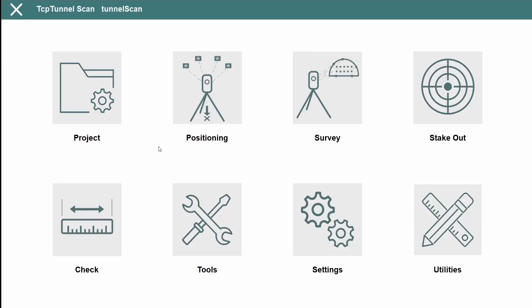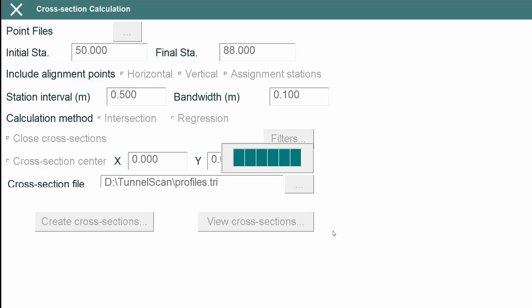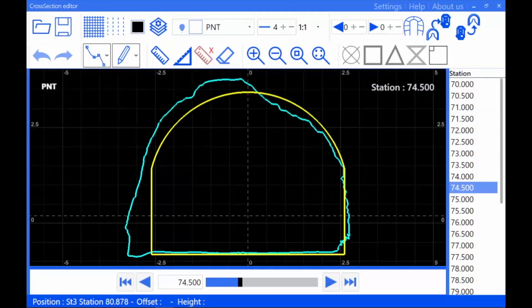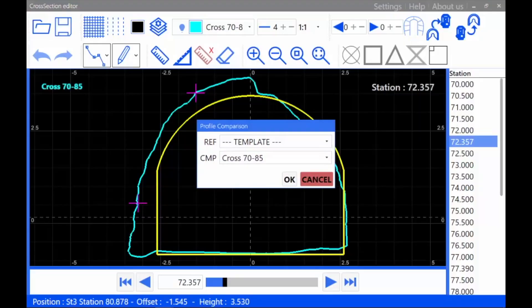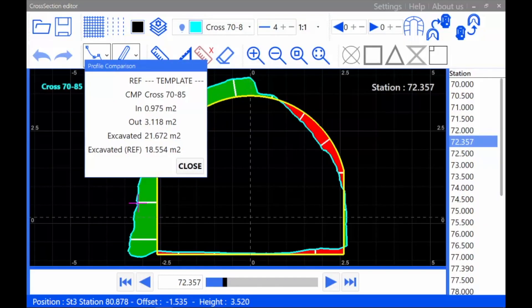High definition tunnel cross sections are quickly calculated from the point cloud and they can be consulted, edited and compared to the tunnel design, showing with different colors the underbrake and overbrake areas.